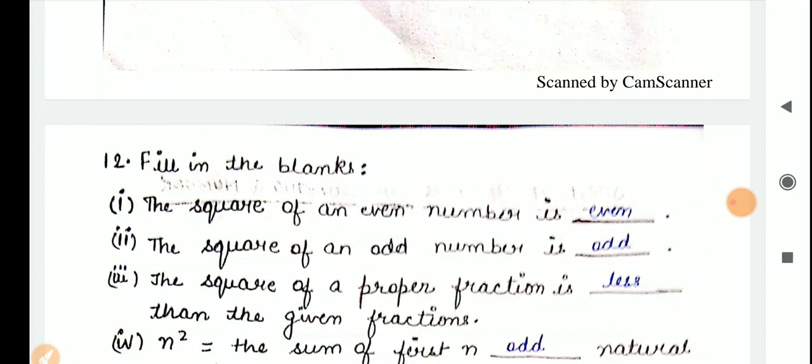Fill in the blanks. These two questions are very easy. The first one is, the square of an even number is... You have studied this identity. So, the square of an even number is always even.